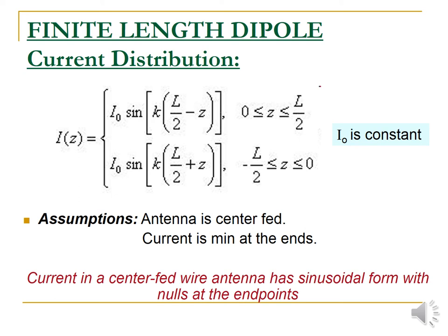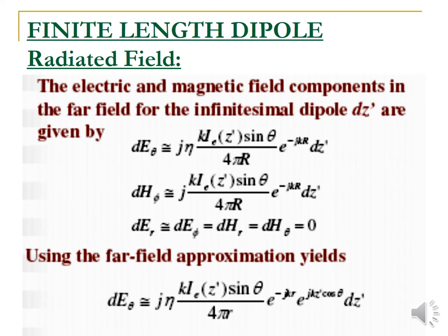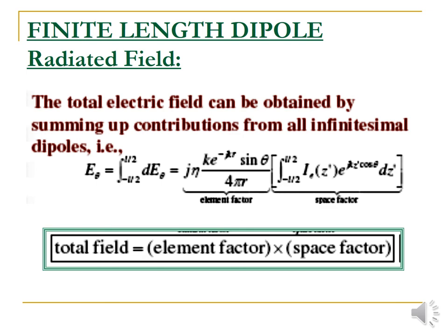Under the two conditions — z from 0 to L/2 gives a negative sign, and z from −L/2 to 0 gives a positive sign — the assumptions are that the antenna is center-fed and current is minimum at the ends. The current in a center-fed wire antenna has a sinusoidal form with nulls at the endpoints. For the finite length dipole radiated field, the electric and magnetic field components in the far field for the infinitesimal dipole are E_theta, H_phi, and E_r; the far field approximation is given by the corresponding mathematical representation.